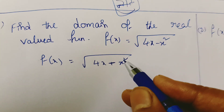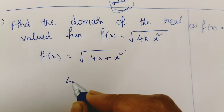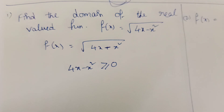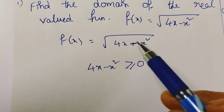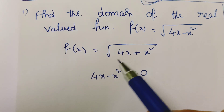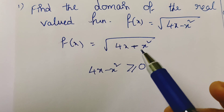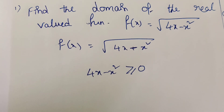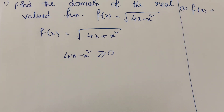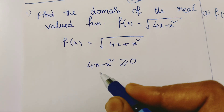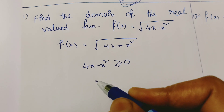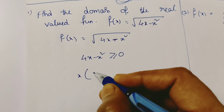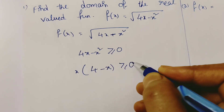For a square root, the first condition is that the expression under the root, 4x minus x squared, must be greater than or equal to 0. Since root of x is defined only for non-negative values, we need 4x minus x squared ≥ 0. We simplify: x is common, so we factor out x, giving x(4 minus x) ≥ 0.